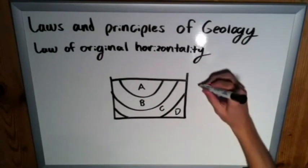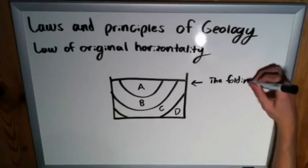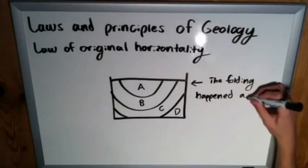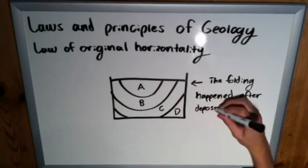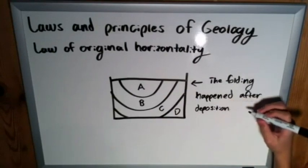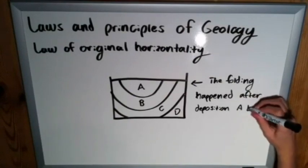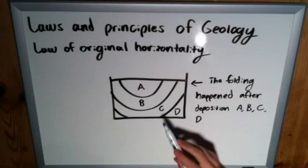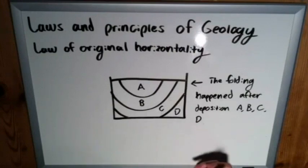So we can say that the folding must have happened after the initial deposition of all A, B, C, and D. Now as I mentioned earlier, this goes back to the whole, so with the law of original horizontality, you can better date events rather than like the rocks themselves. So we say the deposition of A, B, C, and D, which means that the folding, the actual folding of the rocks itself came after these were first placed.